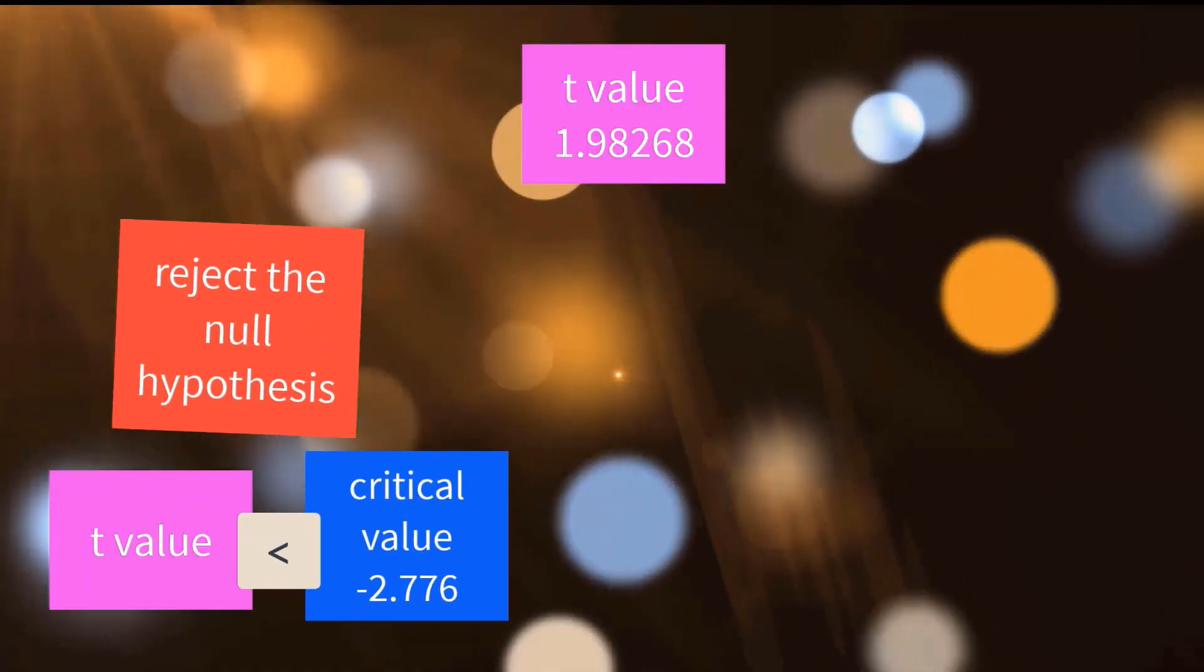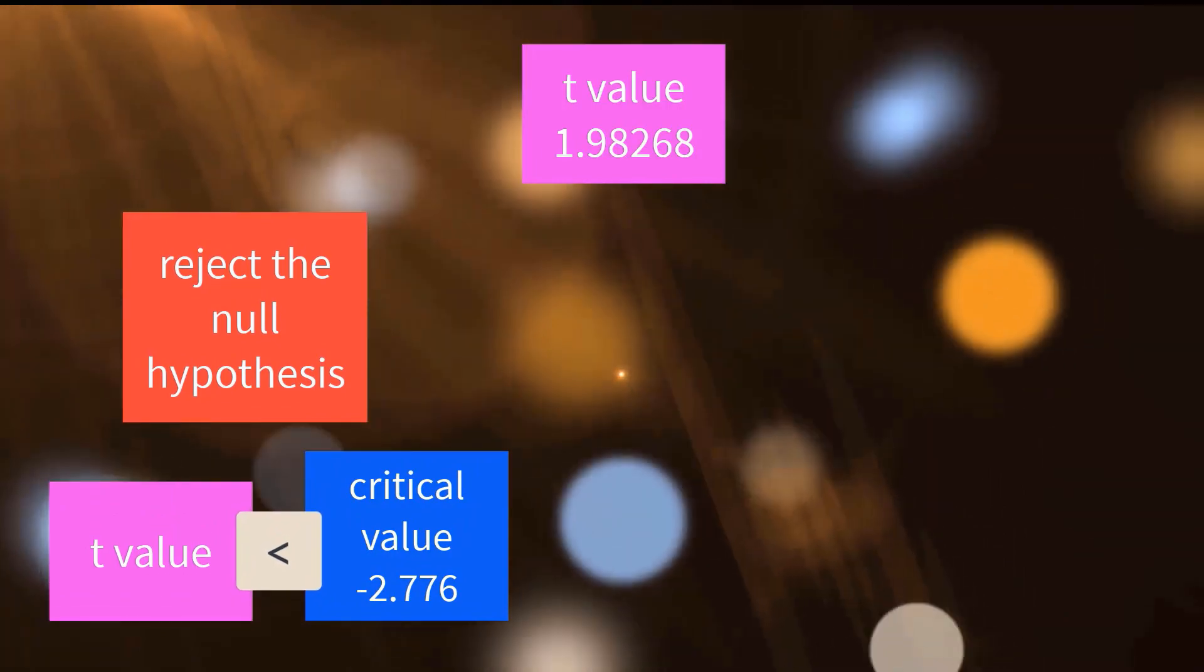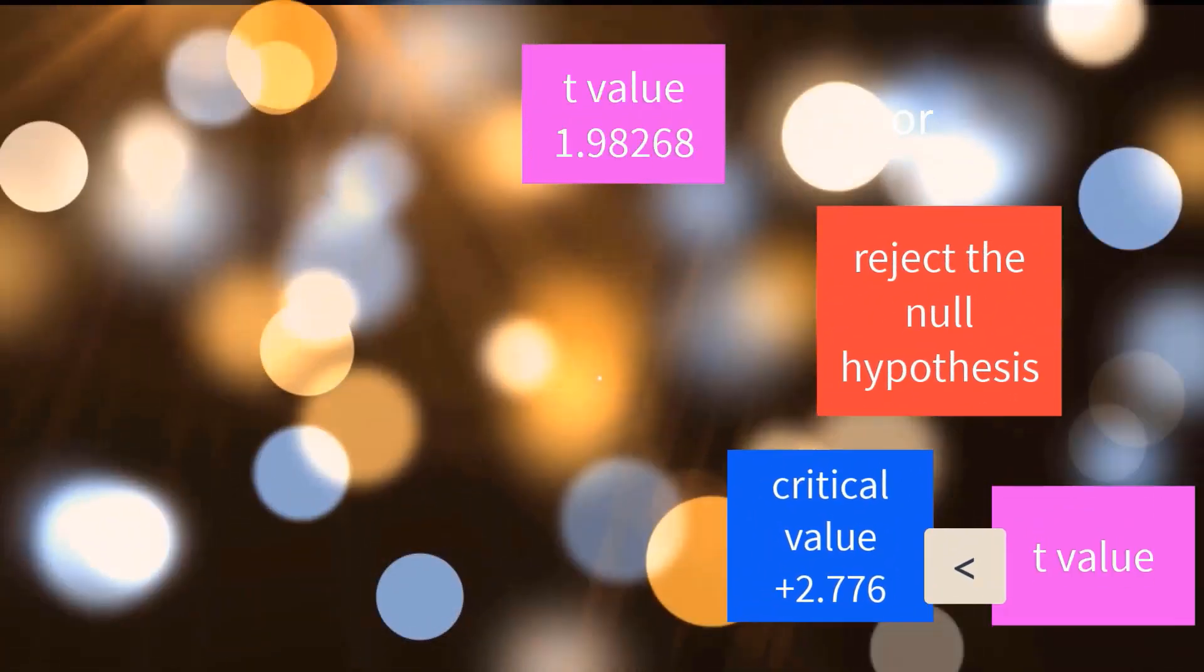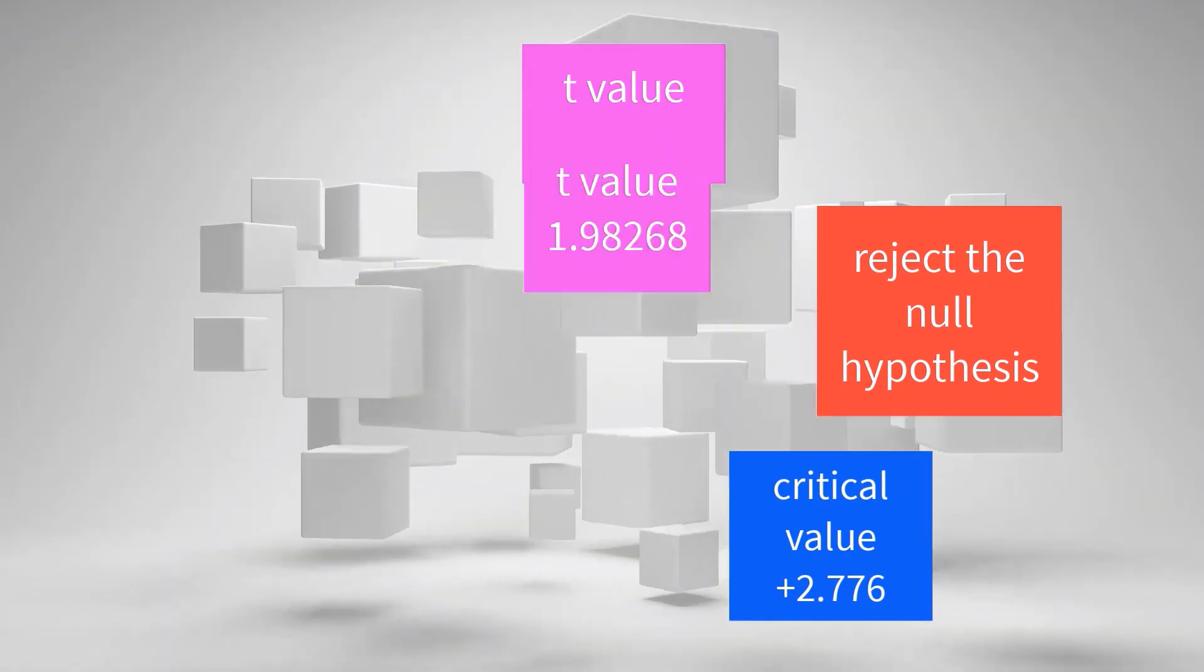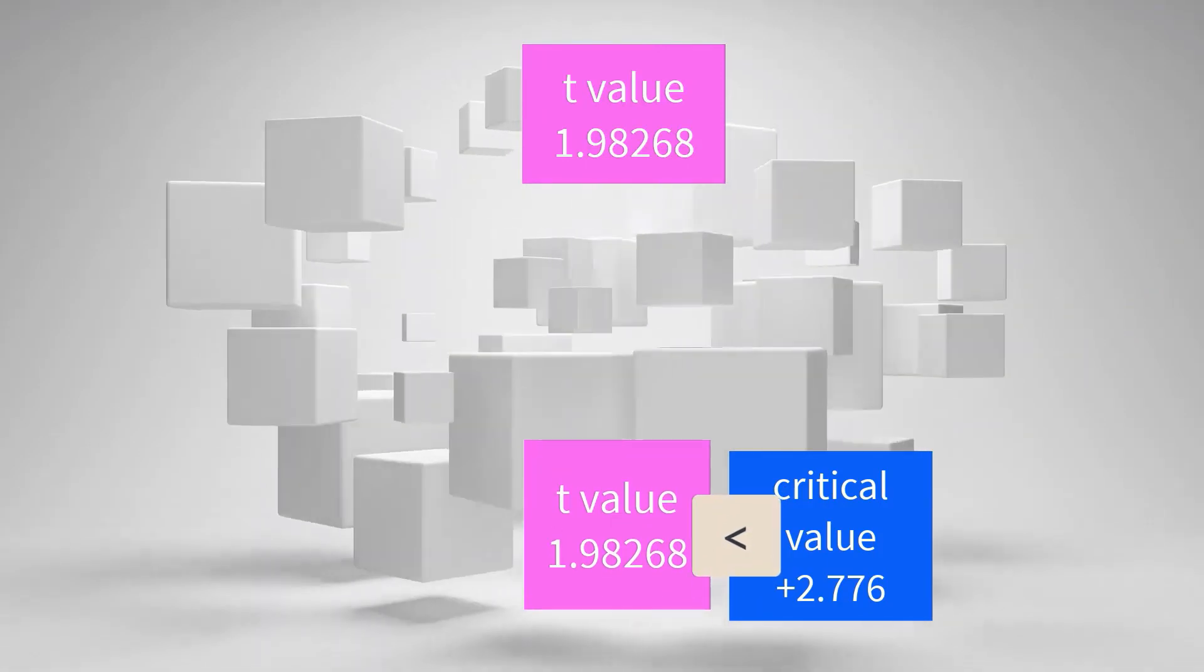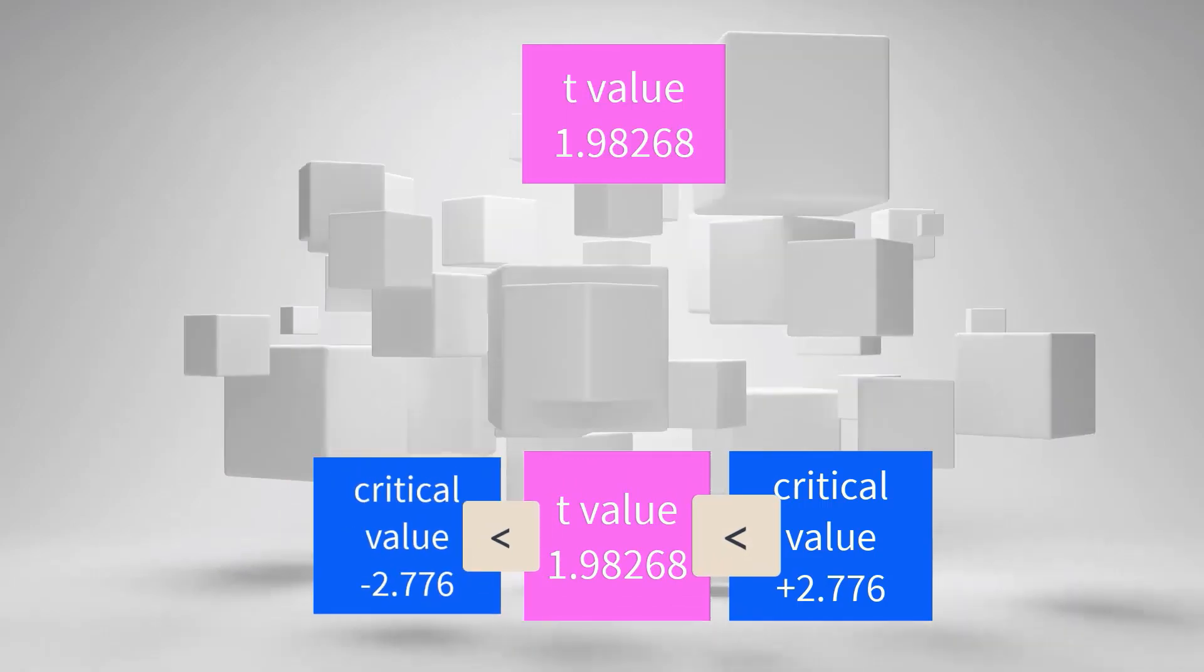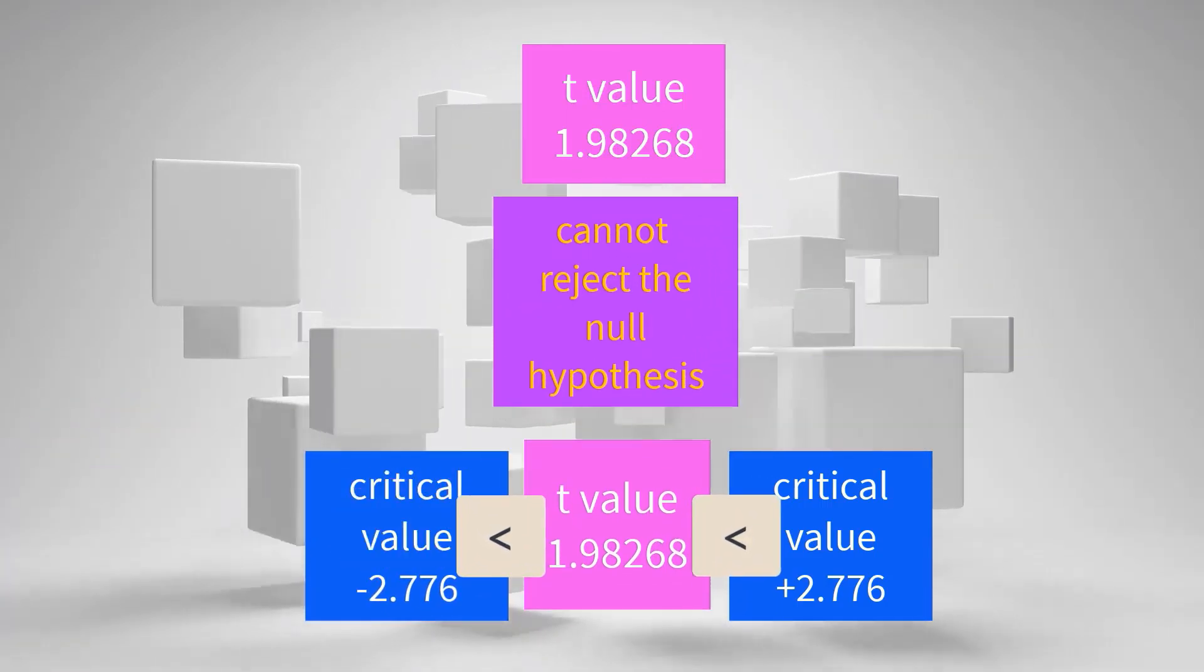We will reject the null hypothesis if t value is less than negative 2.776 or greater than positive 2.776. Since t value of 1.98268 is less than positive 2.776 and more than negative 2.776, we cannot reject the null hypothesis.